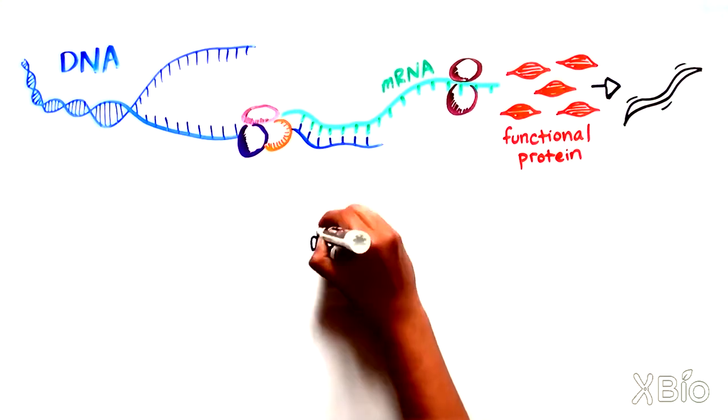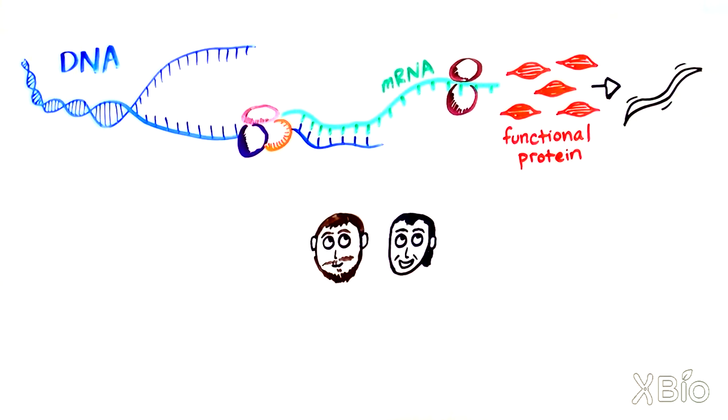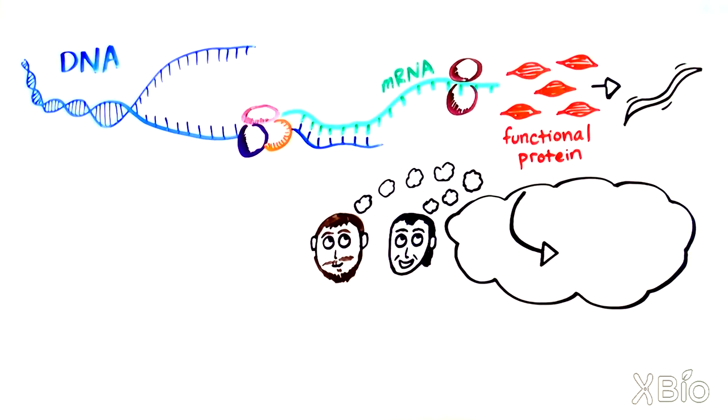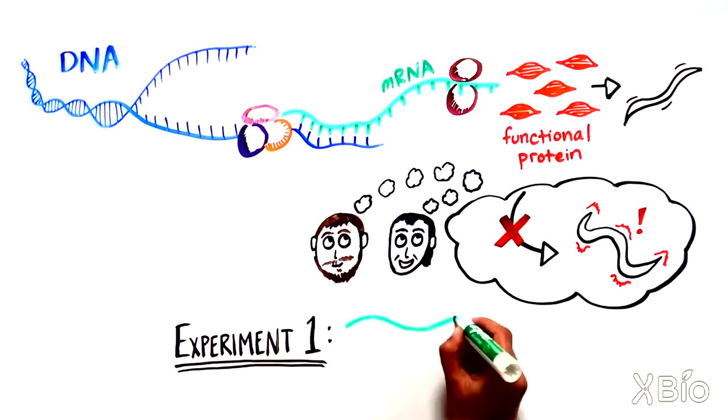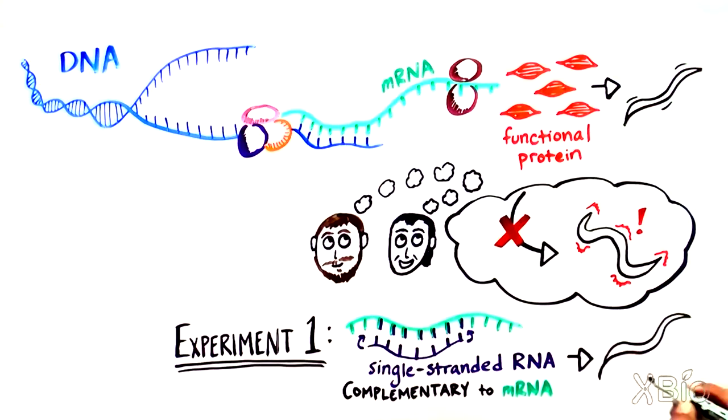So, doctors Fire and Mello decided to see if introducing various forms of RNA sequences that matched an RNA responsible for a worm muscle protein would block production of that protein and result in the twitching behavior. First, they introduced single-stranded RNA, or ssRNA, that was complementary to the target RNA, thinking that this would block the cell's ability to read the RNA. But to their surprise, the worms were completely normal.